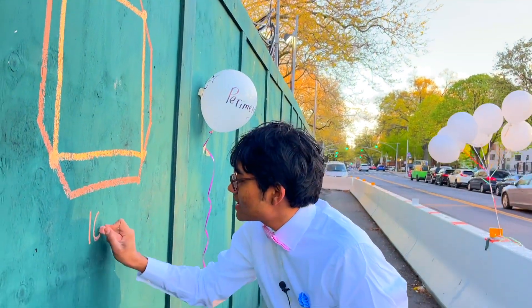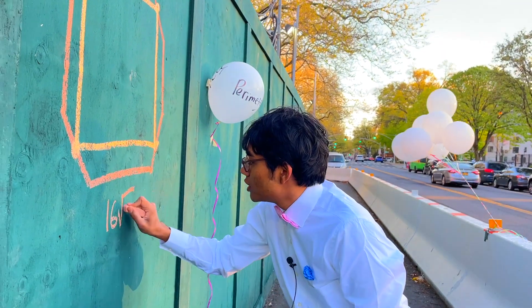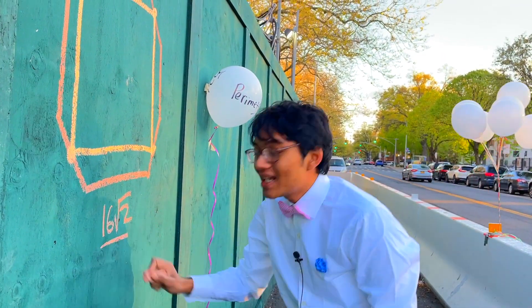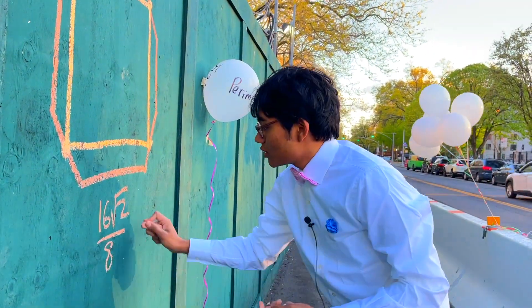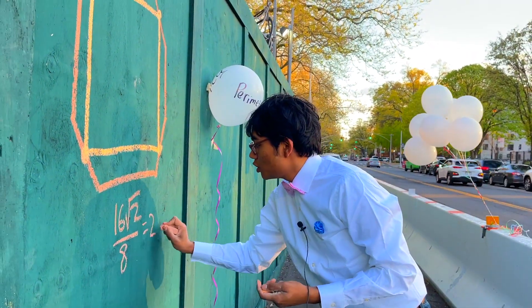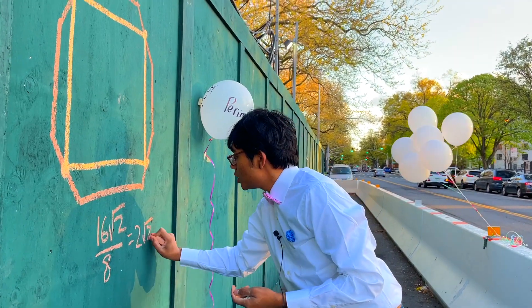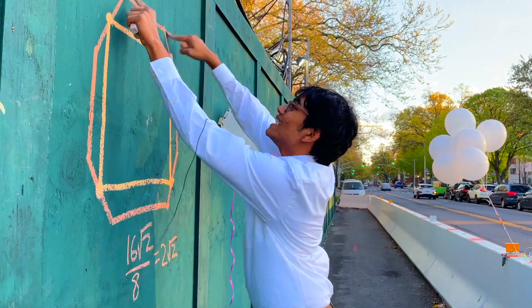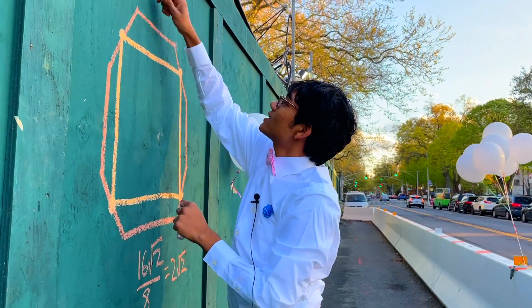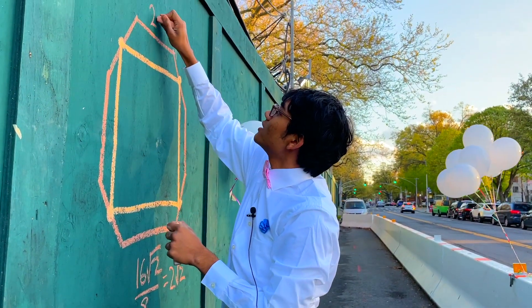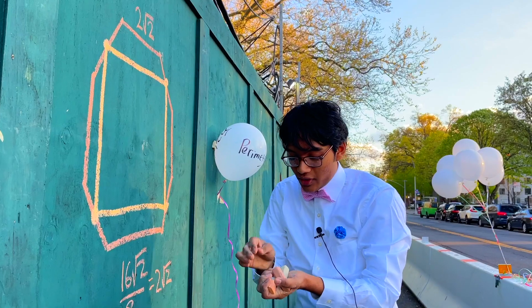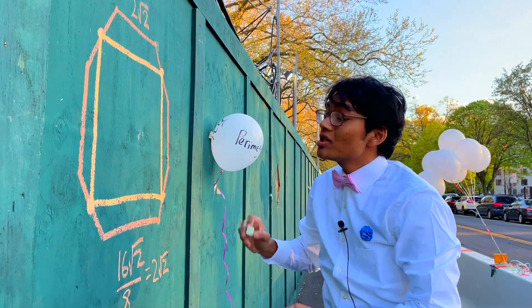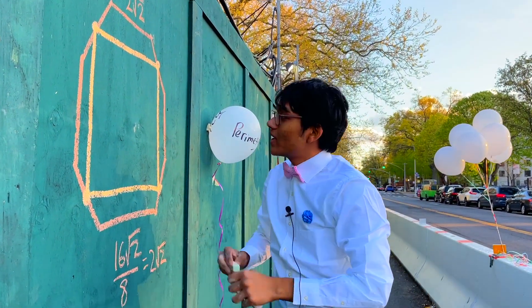So what's that side length? It's going to be 16 root 2 divided by 8 — 8 is the number of sides. So 2 root 2 is the side length of this octagon. Now we know how big one of the sides is, so we can use that to our advantage.